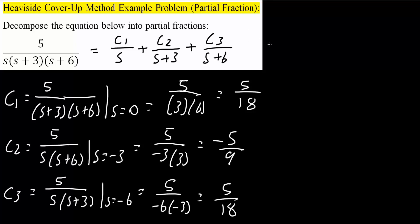And now it's a simple piece. So we simply say is equal to, we know that c1 is five over 18. So five over 18 s, because of here, plus negative five over nine. So we can say minus five over nine, parentheses s plus three, this piece here.